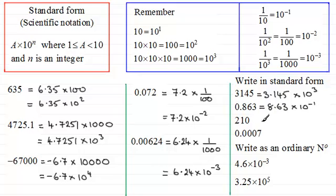For 210, this is going to be 2.1 multiplied by 100 to move the point 2 places to the right. 100 is 10 squared.